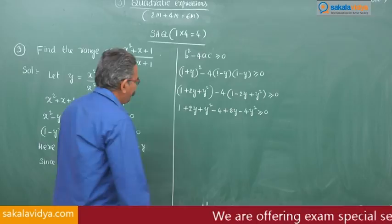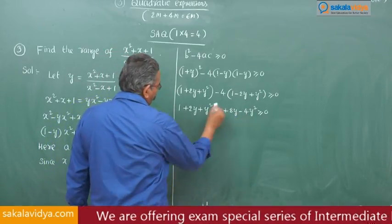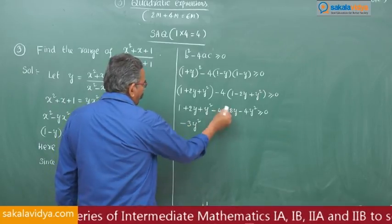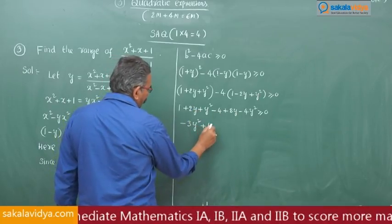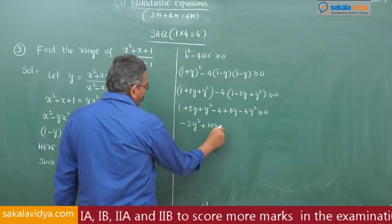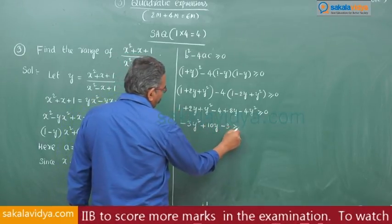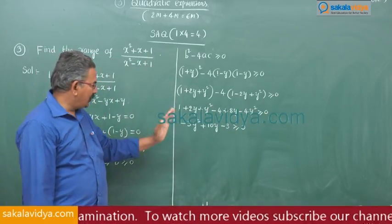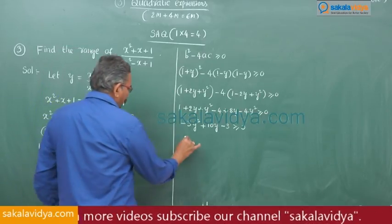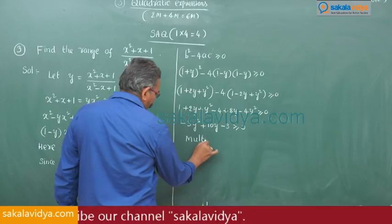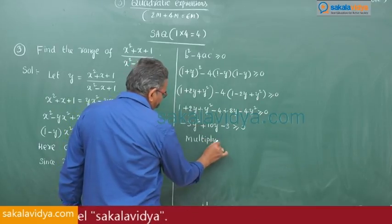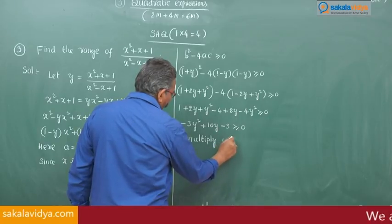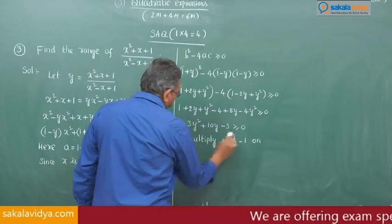Combining like terms: -3y² + 10y - 3 ≥ 0. To make the y² coefficient positive, we multiply both sides by -1.